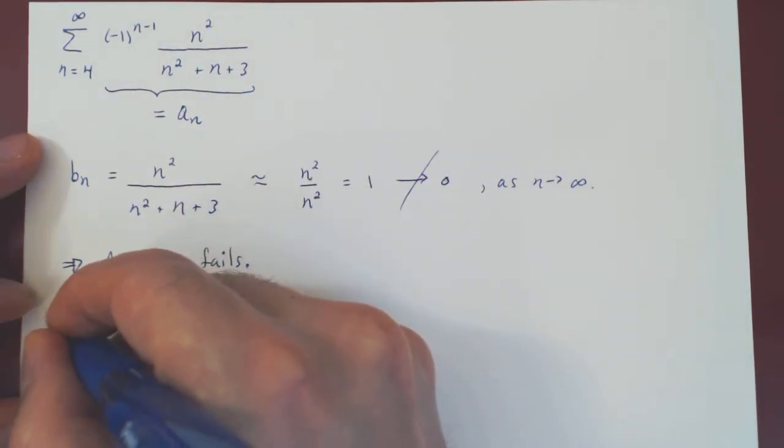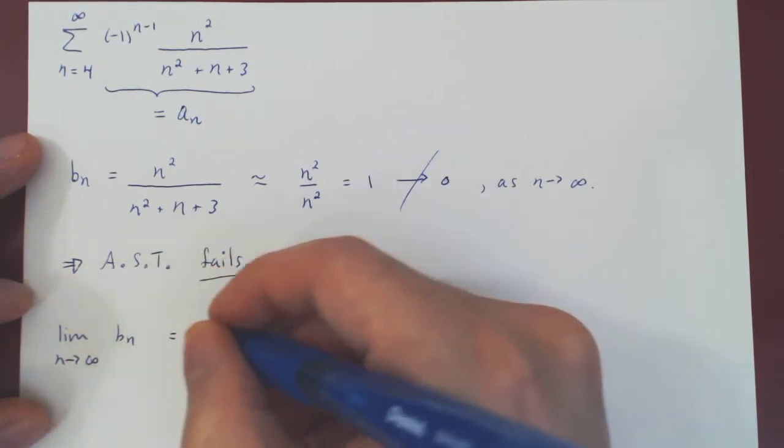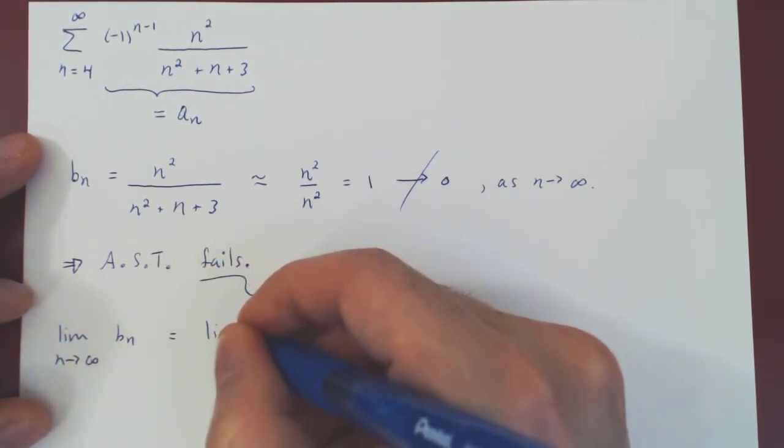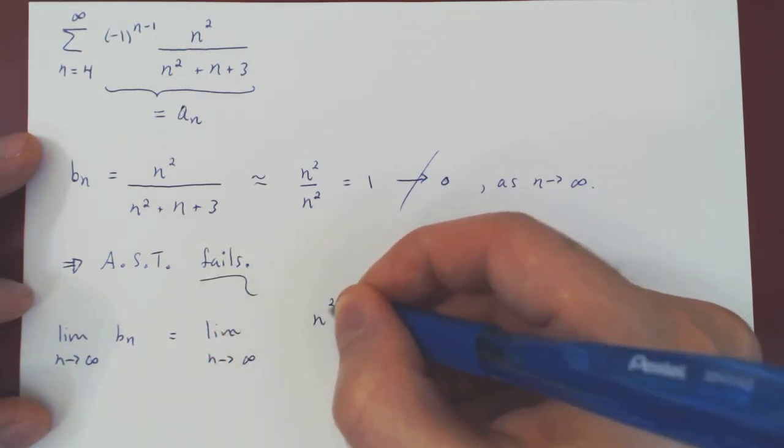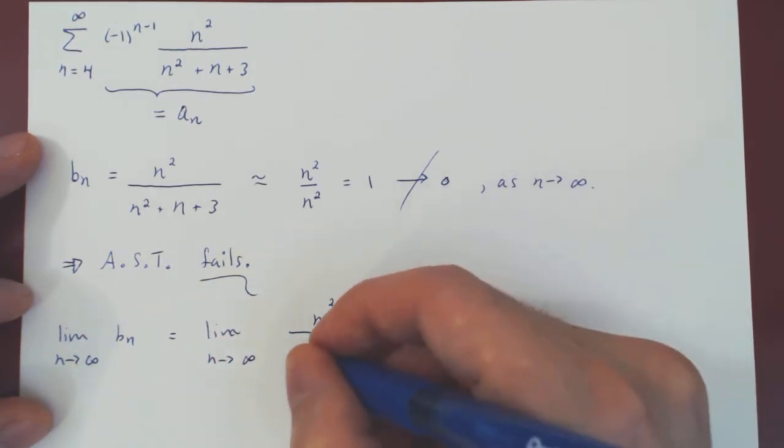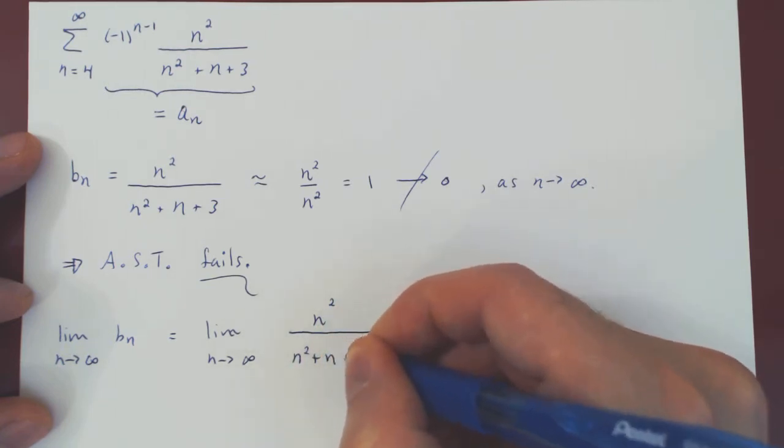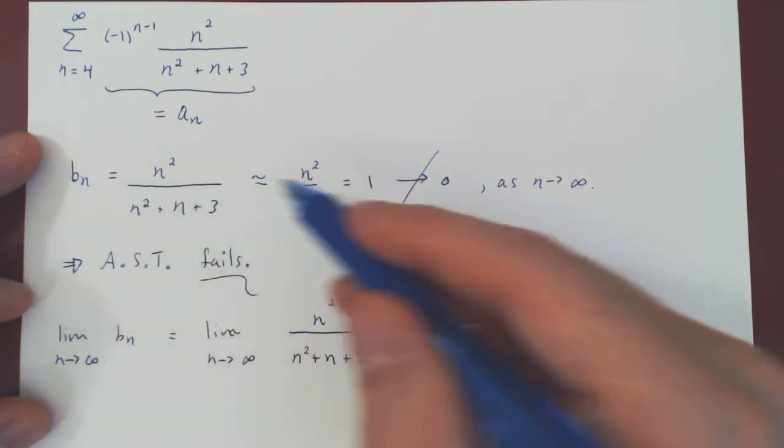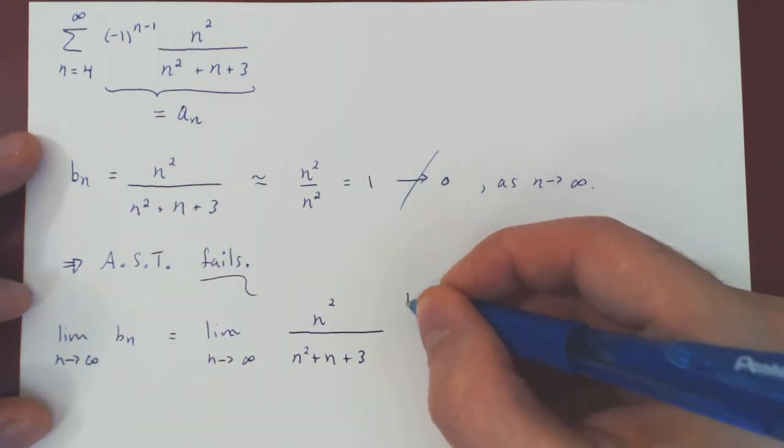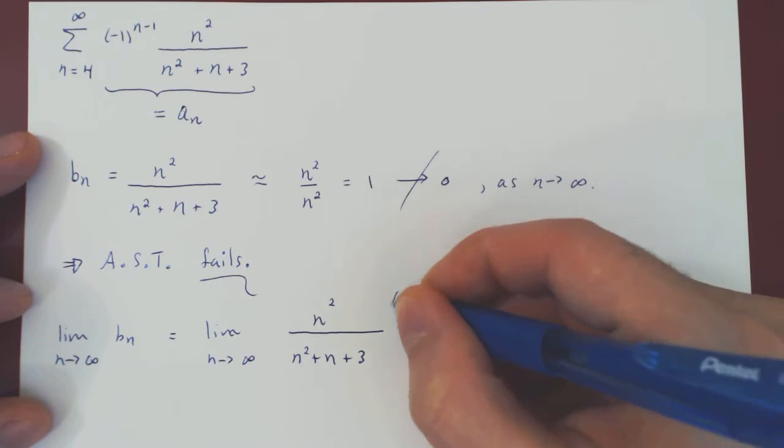So, we have the limit, as n goes to infinity of bn, is the limit, as n goes to infinity of n squared, over n squared plus n plus 3. And we will show that in the limit, bn does converge to 1 now rigorously, multiplying top and bottom by 1 over n squared.